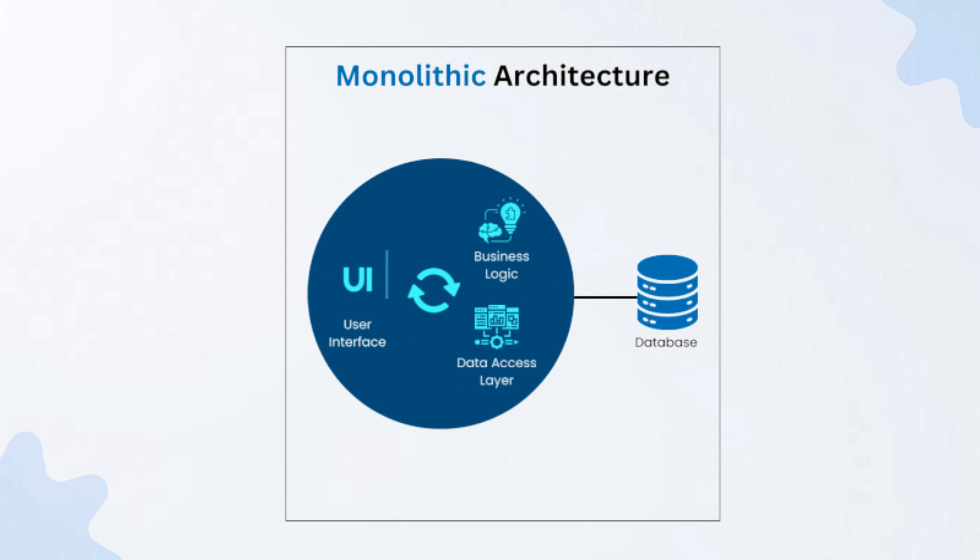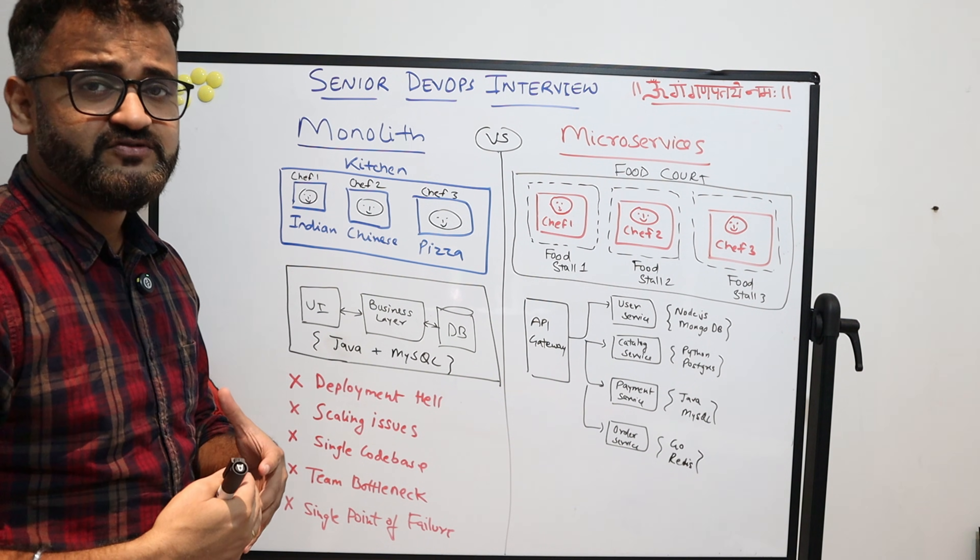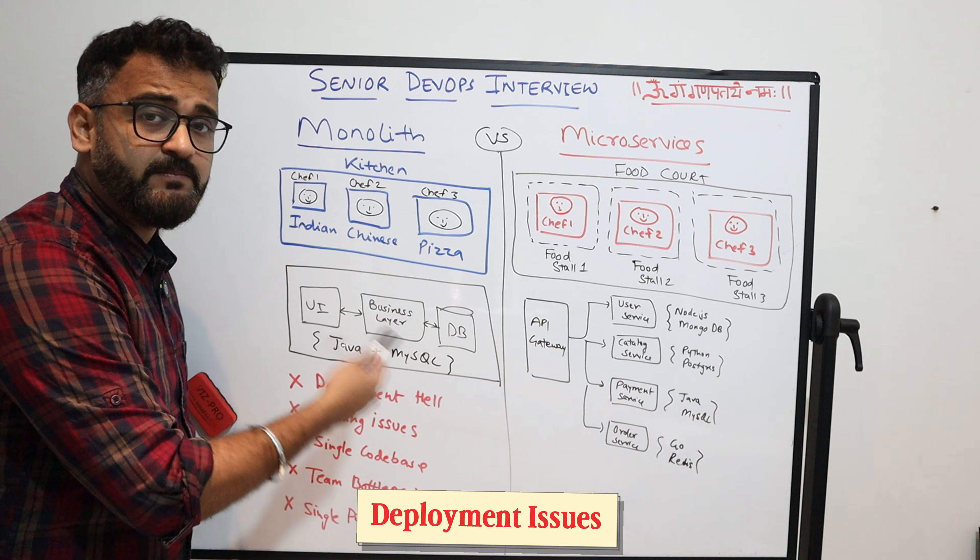You have your UI, your business logic layer, your database—everything is within the same system and this is why it is called monolith. But it has its own problems because you cannot deploy easily.